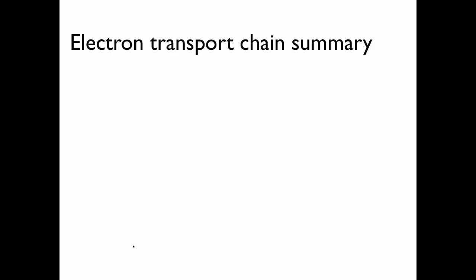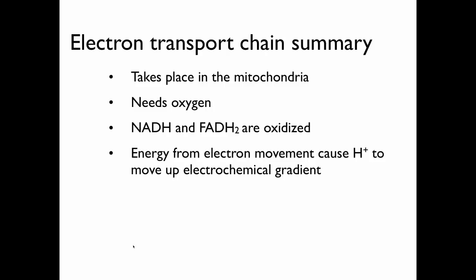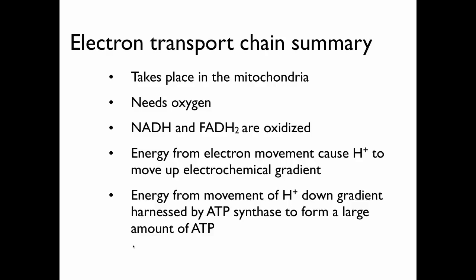Let's go through a quick summary of the electron transport chain. It takes place in the mitochondria. It needs oxygen because oxygen is the final acceptor of electrons through the complexes. NADH and FADH2 are oxidized — they give up their electrons and associated hydrogens to be reformed to NAD and FAD. The energy from electron movements through the complexes causes hydrogens to move up their electrochemical gradient. Then that energy from the movement of hydrogens down the gradient through ATP synthase can be harnessed to form a large amount of ATP.